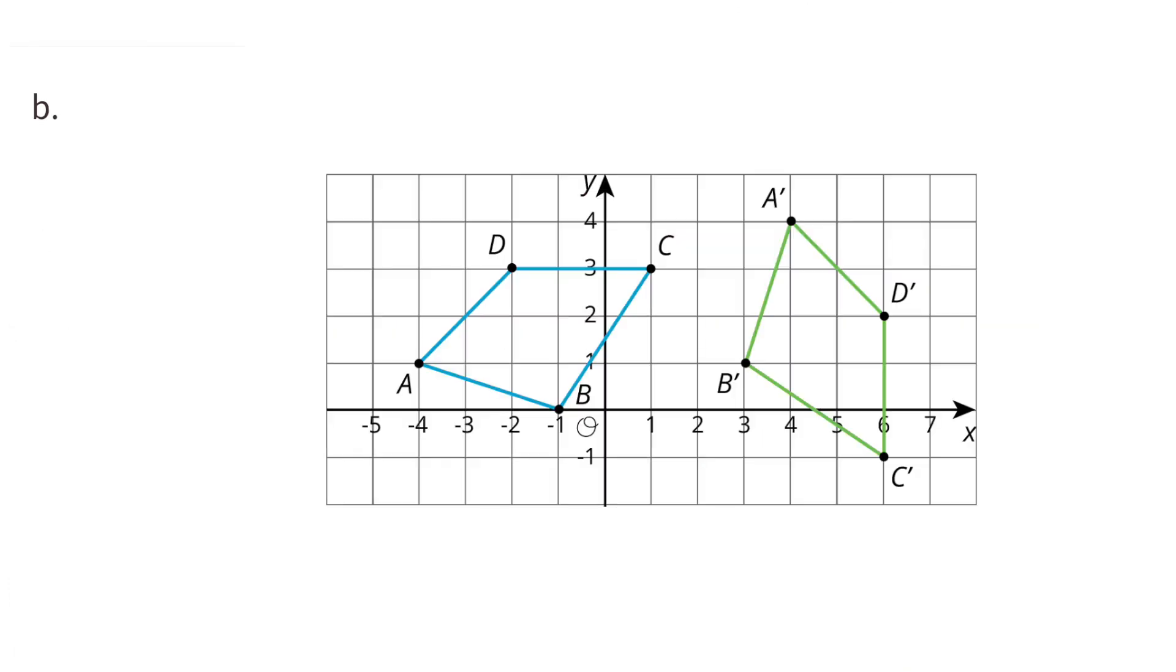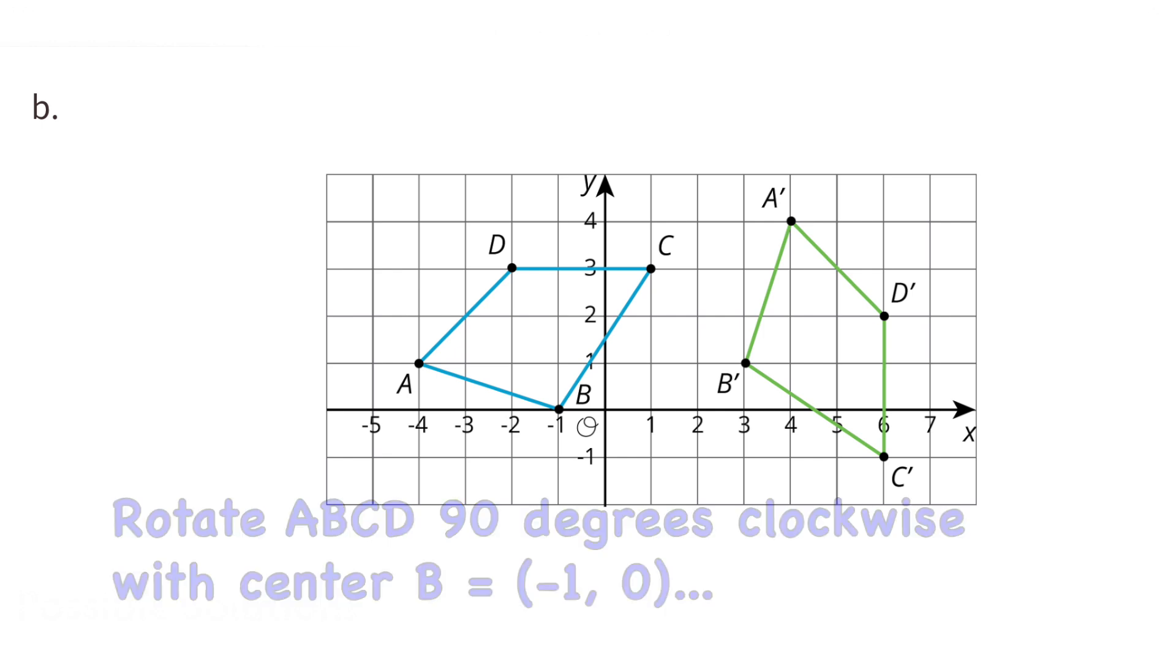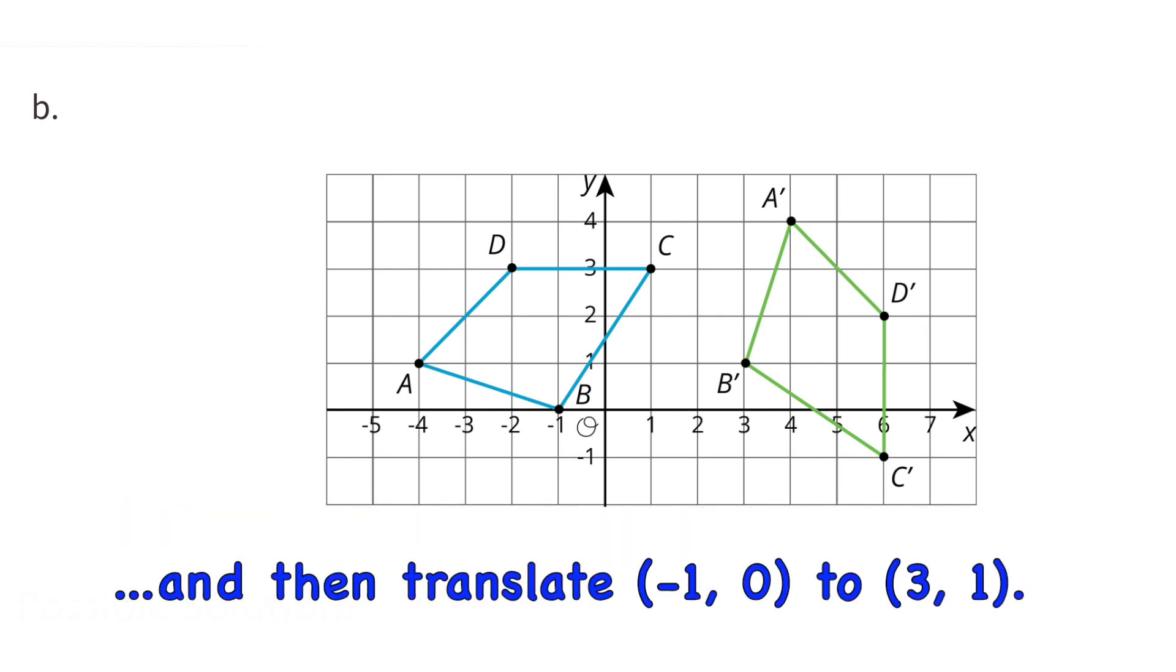Part B: To get from the first polygon to the second polygon, I would rotate ABCD 90 degrees clockwise with center B equaling coordinates negative 1 and 0, and then translate coordinates negative 1, 0 to coordinates 3 and 1.